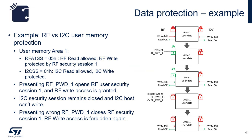Let's look at an example of data protection. The user memory area 1 has the RF-A1-SS register set at 0x05: RF-READ is allowed but RF-Write is protected. The I2C-SS register is also set at 0x05, meaning I2C-READ is allowed but I2C-Write is protected.